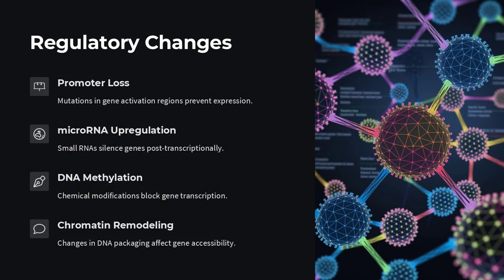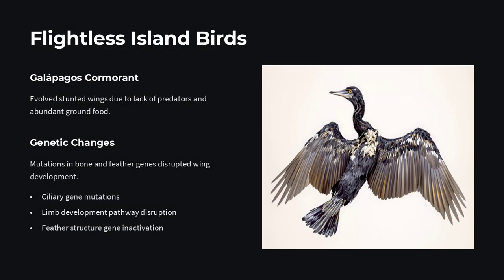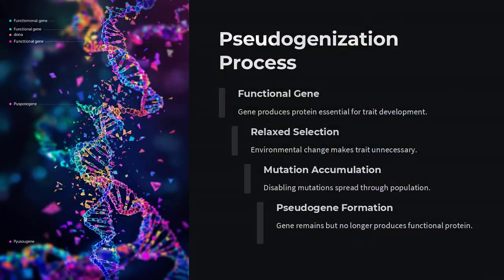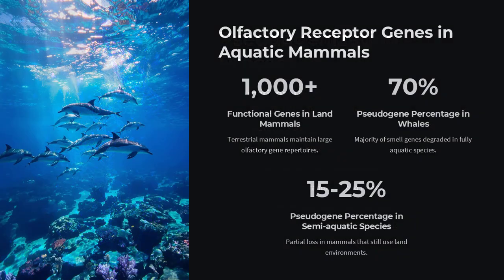At its core, the process hinges on relaxed selection and the economics of energy. Maintaining elaborate structures demands metabolic investment and developmental regulation. When a trait no longer confers a fitness advantage, natural selection no longer weeds out deleterious mutations, allowing function-disabling changes to spread.